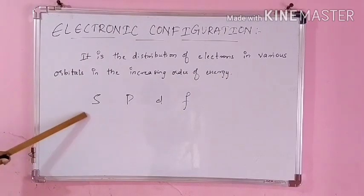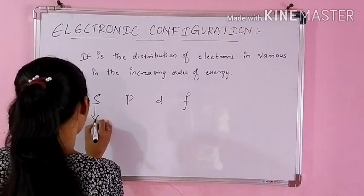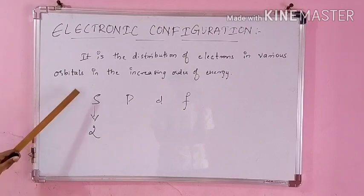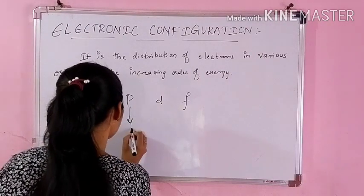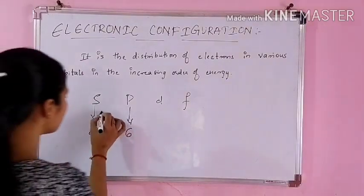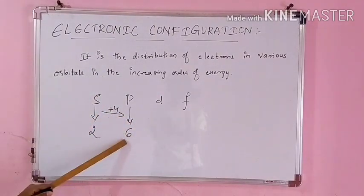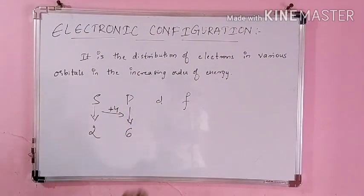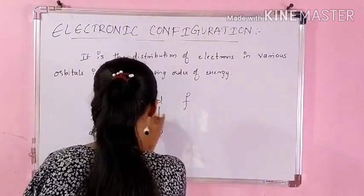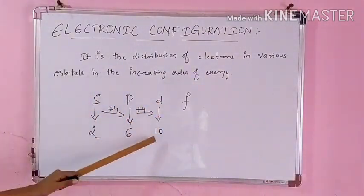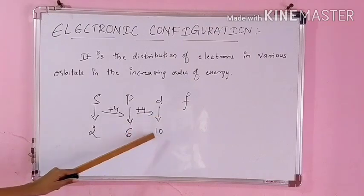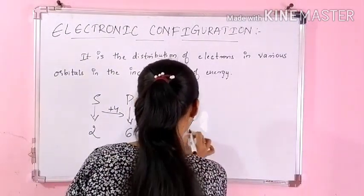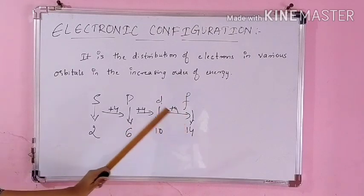You have to remember that the maximum your S orbital can accommodate is 2 electrons — maximum 2, or less than 2, but never more than 2. For P, maximum of 6 electrons — you do plus 4, so it will be 6. For D, maximum of 10 electrons — again plus 4. And the F orbital will have maximum of 14 electrons.